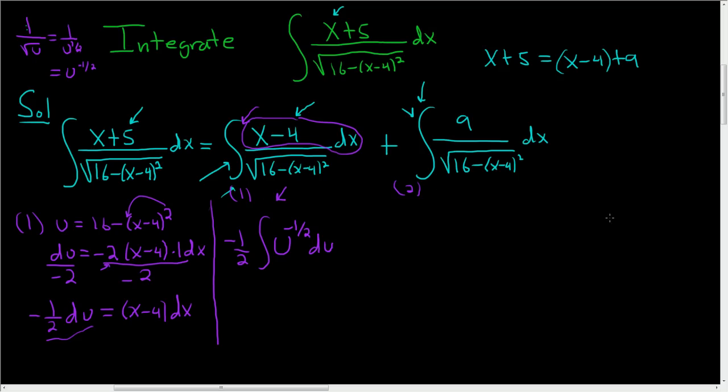For the second integral, we're going to let w equal x minus 4. And then so dw is equal to dx. And then we'll rewrite it as follows. This is plus the indefinite integral of 9 divided by the square root of 4 squared minus w squared and then dw.